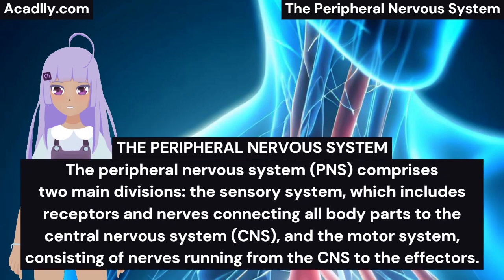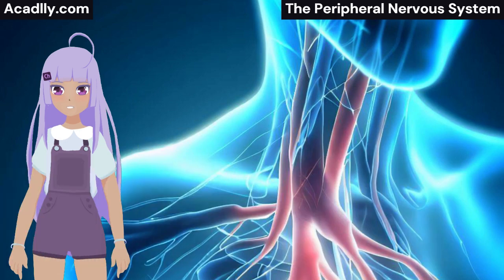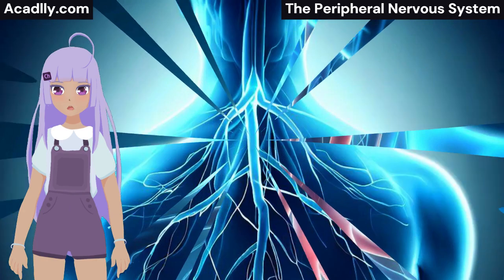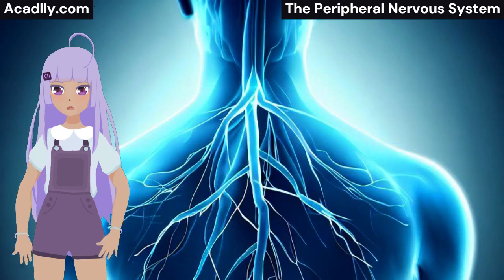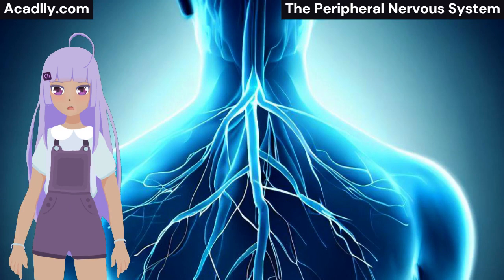The Peripheral Nervous System (PNS) comprises two main divisions: the Sensory System, which includes receptors and nerves connecting all body parts to the Central Nervous System (CNS), and the Motor System, consisting of nerves running from the CNS to the effectors. The PNS consists of 12 cranial nerves connecting the brain to the head and neck region, and 31 spinal nerves connecting the spinal cord to the thorax, abdomen, and limbs. The Motor System is further divided into the Somatic and Autonomic Nervous Systems.